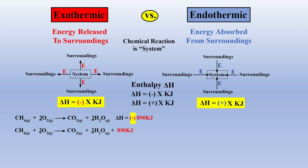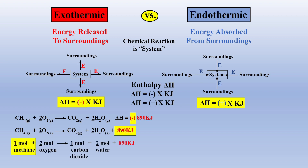In addition, we can rewrite this combustion reaction with the 890 kilojoules of energy as a product, as it is released to the surroundings. Thus, for every one mole of methane combusted, 890 kilojoules of energy are also formed as a product, which is the basis for stoichiometric calculations with energy.